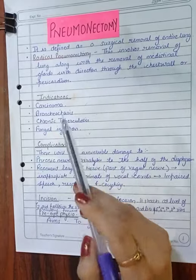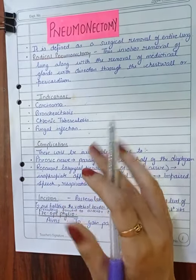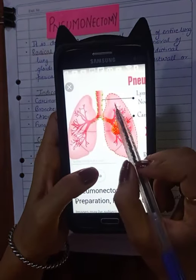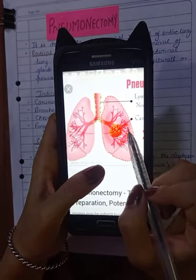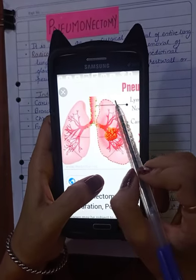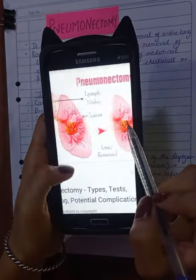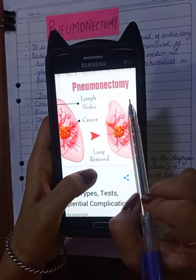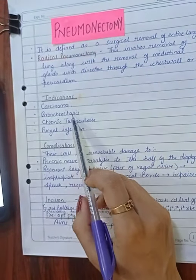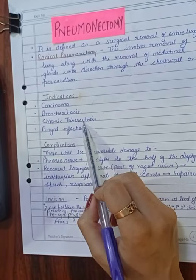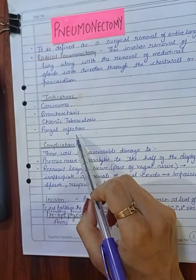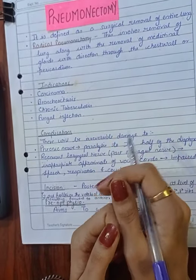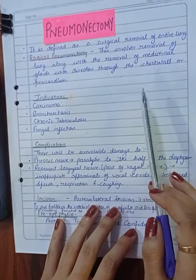The indications for this procedure: the first one is carcinoma — when there is any cancer in the lung, we go for this procedure. As shown in the diagram, the entire lung has been removed. The second indication is bronchiectasis, third is chronic tuberculosis, and fourth is fungal infection.